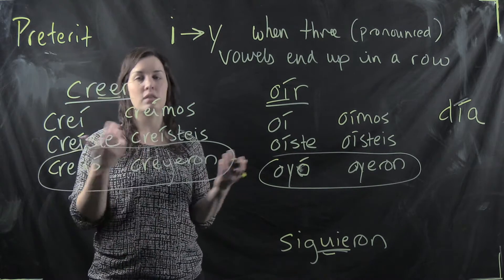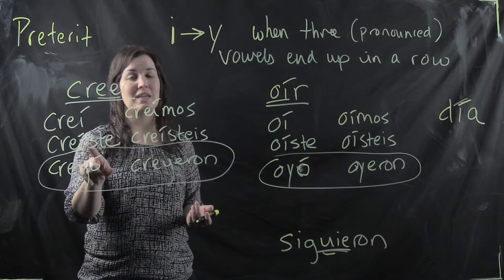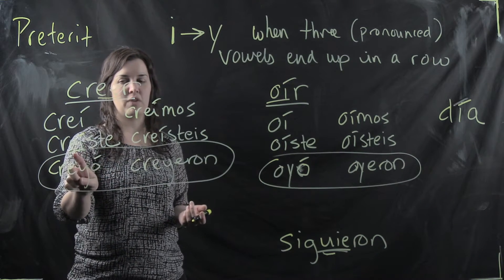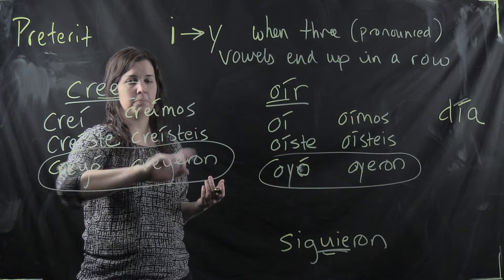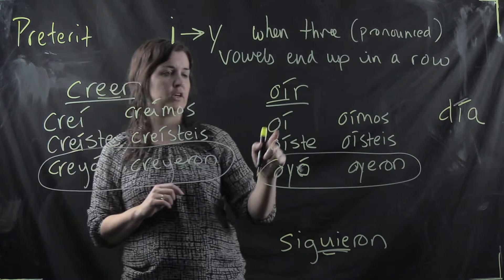Creí, accent. That's typical in the ER endings. Creíste, that's not typical. It's because that E is a strong vowel and the I needs that accent to keep its emphasis. Same thing here, same thing there. Okay? It's happening over here too.